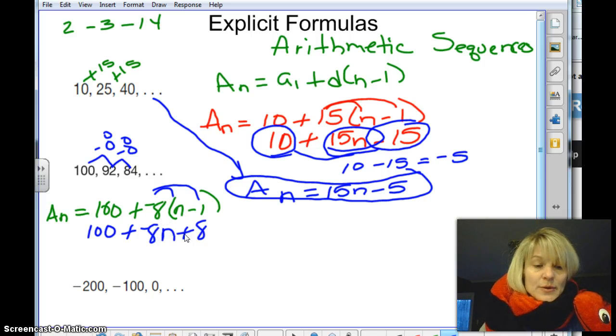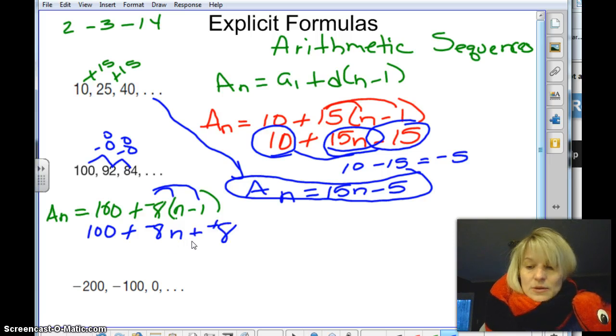Or, if you think about it, you could bring down, you know, if you want to look at it differently, there's a couple ways to look at it. We could say negative 8 times n is negative 8n. Bring down the minus, and then you'd have negative 8 times 1, which would be negative 8. And then those turn to pluses. So either way, whatever makes more sense in your brain.